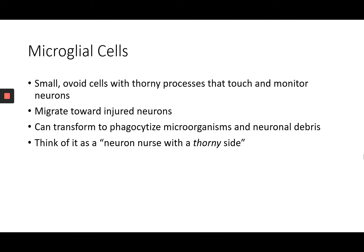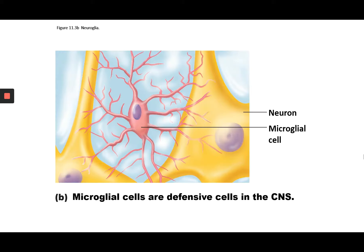Microglial cells are phagocytes in the central nervous system. They are also highly branched, but their cell bodies are small and ovoid. They are able to migrate toward injured neurons and destroy those injured neurons as they break apart. They appear similar to astrocytes but with much more spiny and thin protrusions, and without the wrapping ends seen in astrocytes.